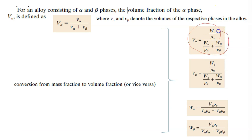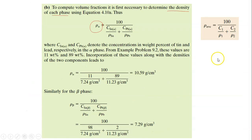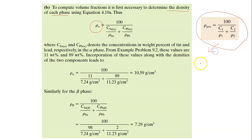The volume fraction formula for alpha and beta requires you to know the mass fraction and the densities ρα and ρβ. To calculate ρα and ρβ, you use the average density formula for an alloy composed of two components — component one and component two — which you learned in the previous chapter on imperfections of solids.